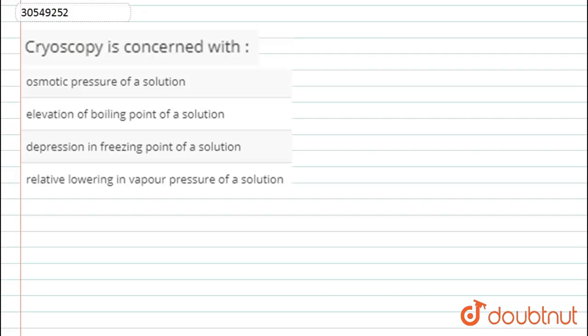We have to tell that cryoscopy is used in which method. So, we can see that cryoscopy is used to measure freezing point. Cryoscopy is a device which we use to measure freezing point of any solution.